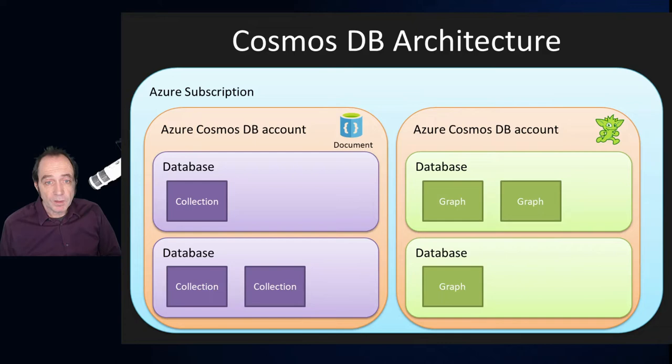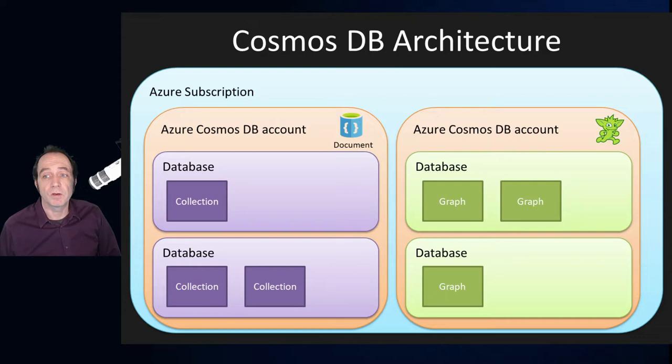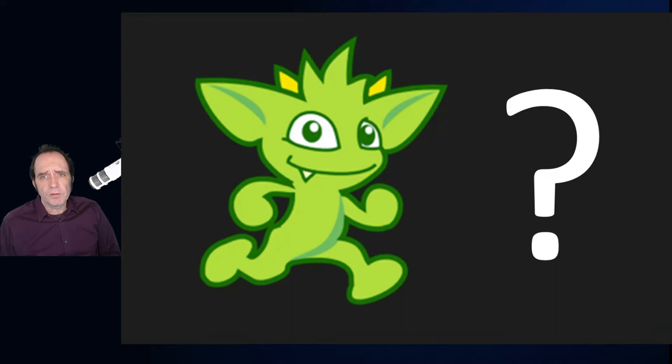A bit about the architecture. If you've worked with Cosmos DB using the document model, you may be creating databases and then within those databases, generating collections with documents inside them. If we create a Cosmos DB account using the graph model, we're going to have databases, and within those databases we create graphs. You can have multiple databases and multiple graphs within a database.